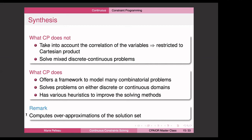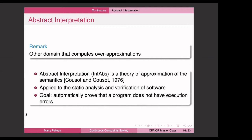A remark about the continuous case: it computes an approximation of a solution set. Another research area that also computes approximations of solution sets is abstract interpretation, which I'll call AbsInt for short — because I cannot use 'AI,' it's too ambiguous. Abstract interpretation is a theory of approximation of semantics, defined in 1976. It's applied to static analysis and verification of software. One of the goals is to automatically prove that a program does not have execution errors.